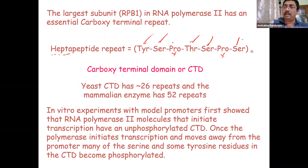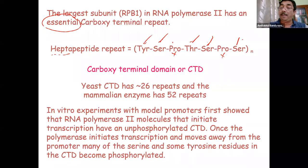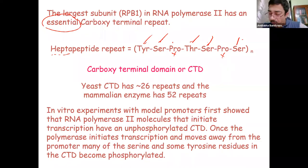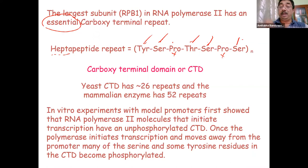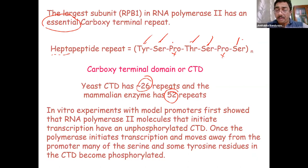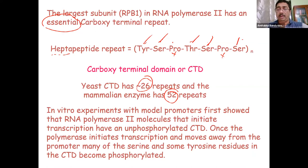This C-terminal domain is described as essential. The C-terminal domain of yeast has 26 repeats, while in mammals it has 52 repeats. Phosphorylation is primarily at the serine residues, and threonine residues can also get phosphorylated.